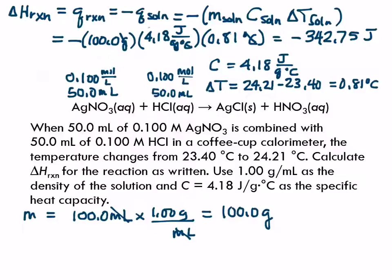100 times 4.18 times 0.81. So 338.58 joules. How many significant figures should that number have? 3. Why 3? How many does this one have? 4. And this one has 3. And this one has 2. So this has 2.